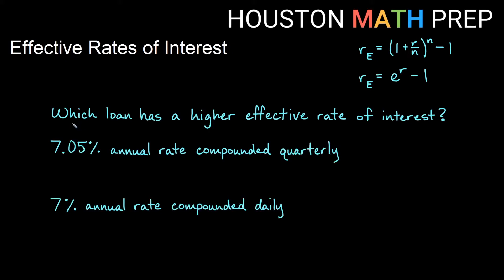Let's work through one more of these. Same thing. We want to know which one has a higher effective rate of interest. One of them is 7.05% annual rate compounded quarterly. And one of them is a flat 7% annual rate compounded daily. Now, neither of these are continuous interest. Both of them are discrete every quarter every day. And every so often means we use this formula here, the 1 plus r over n to the n minus 1.